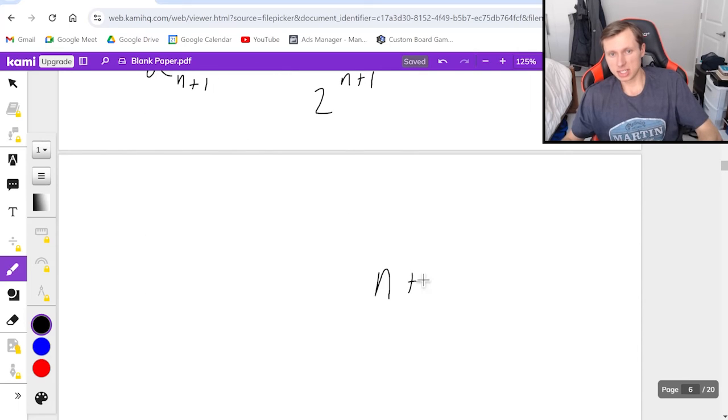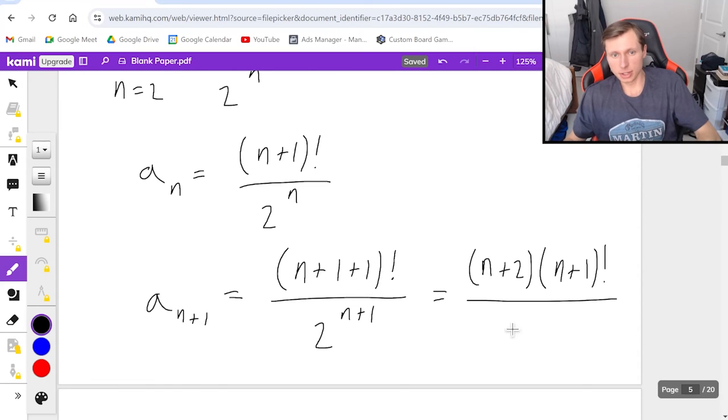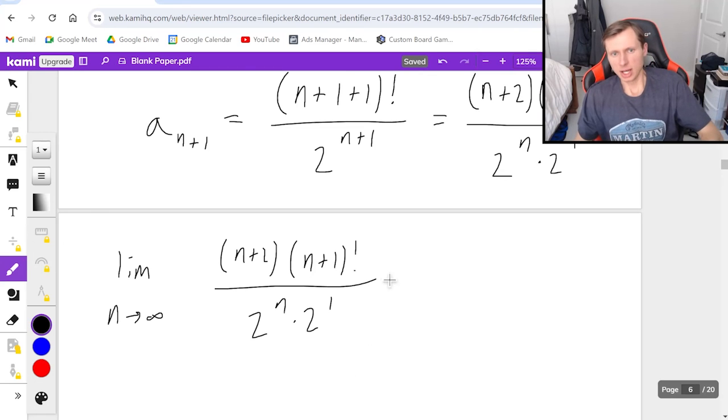It takes a while to get used to how to write these n factorials. But in general, if I have, for instance, n plus 6 factorial, I would rewrite this to n plus 6 times n plus 5 factorial. And now hopefully you're seeing the pattern here. And then in the denominator, this is 2 to the n times 2 to the first. Now I'm going to divide these things. It will be the limit as n goes to infinity of n plus 2 times n plus 1 factorial divided by 2 to the n times 2. And then instead of dividing by the complex fraction, I'm just going to multiply by the reciprocal, which is 2 to the n divided by n plus 1 factorial. Look what cancels here. A lot of stuff does.